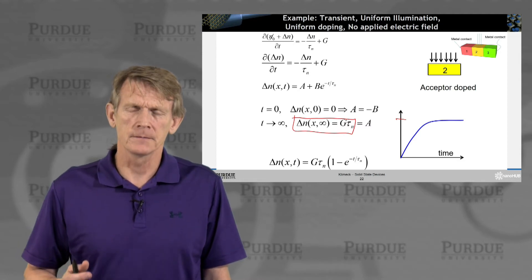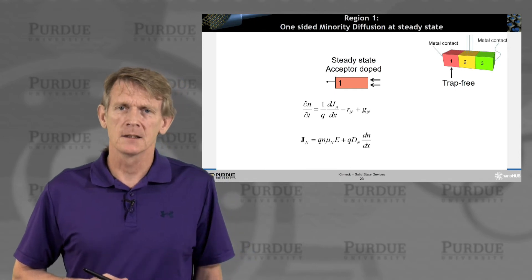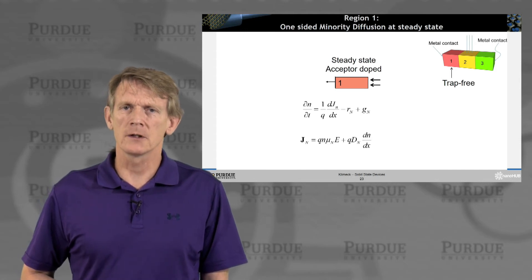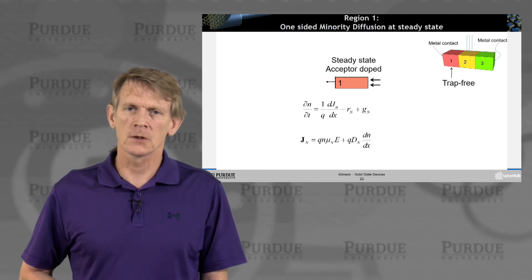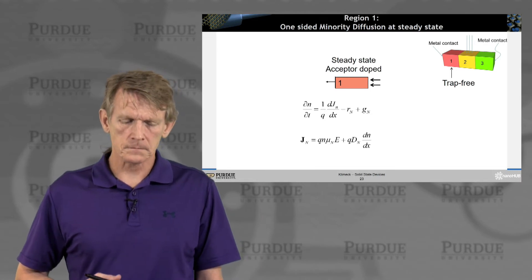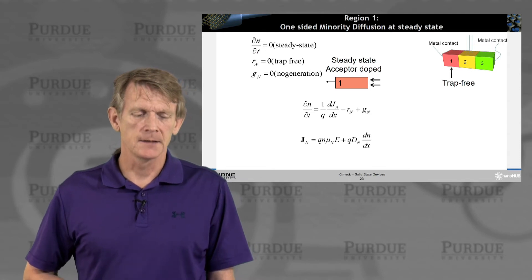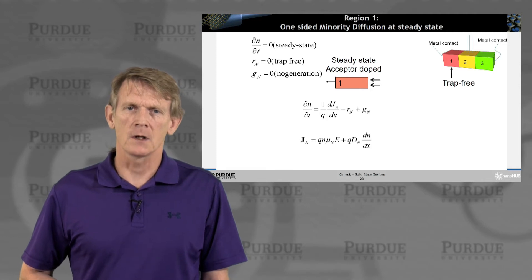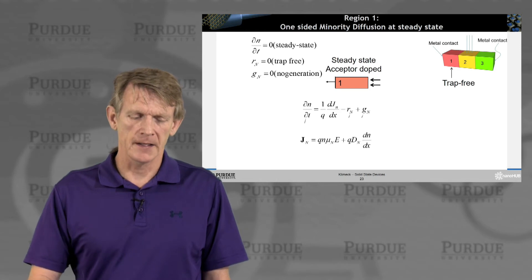Okay. This is pretty simple, right? There's nothing really fancy here. Now, we look at the left side of our hypothetical device. It's a one-sided minority diffusion that we're considered here at steady state. So we assume that there is no change in time. And we also assume that there's no traps, as we had laid out, and there is no generation. So r is zero, n is zero, and the differential of time is zero.